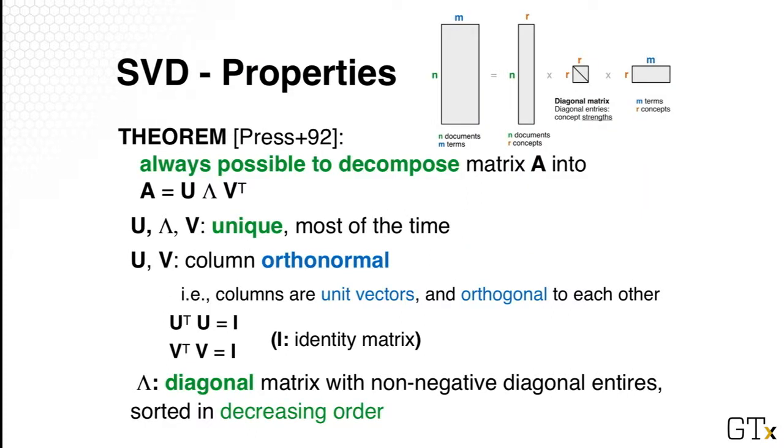There's actually a theorem that says it's always possible to decompose our data matrix A into the three smaller matrices. And they are unique most of the time. And not only that, U and V, the columns in those matrices are orthonormal. So the columns are unit vectors and they are also orthogonal to each other.